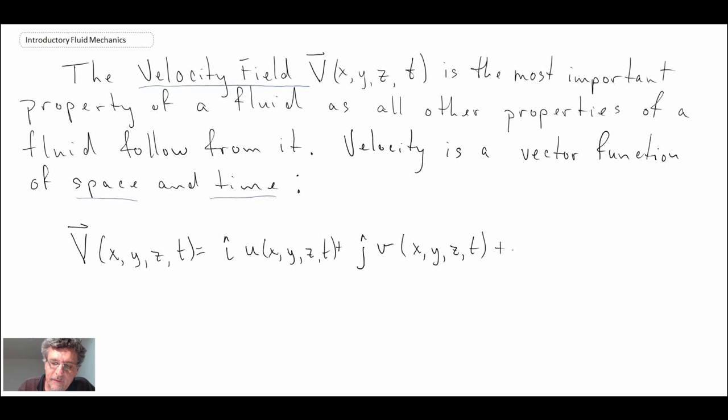And the symbol that we use for velocity in that direction is usually little v. And then finally we have the velocity components in the z direction, or k, for the unit vector. And there we use little w. So that's typically the way that we express velocity for a fluid.